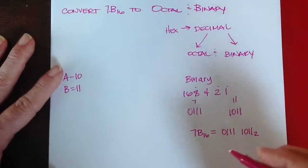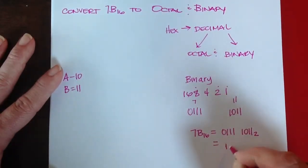And I don't have to have that 0 in front. It could just be 1, 1, 1, 1, 1, 0, 1, 1, base 2.